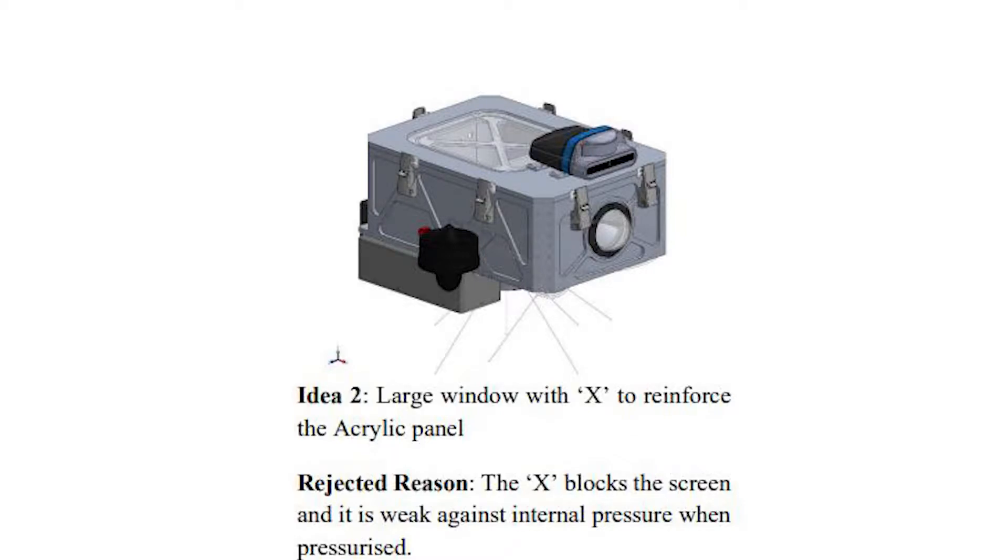Another idea was to incorporate a large window with an X reinforcement or a similar bracing, to support the acrylic display panel. Although this panel still allowed for us to have a look at the status display inside the AUV, we realized that the bracing would block a significant portion of the display. Furthermore, from FEA analysis, we found out that this design was susceptible to failure from internal pressure when the hull was pressurized.